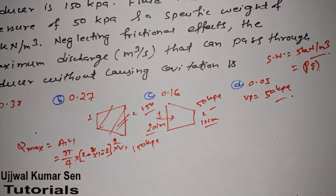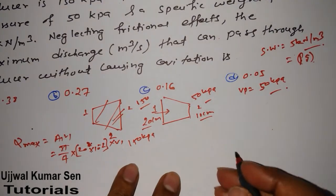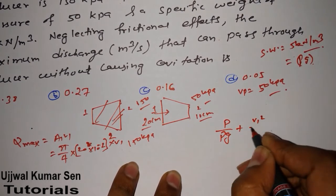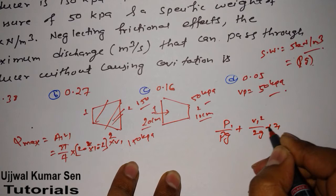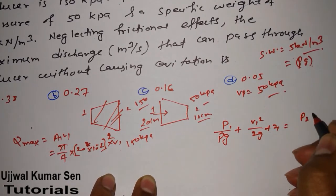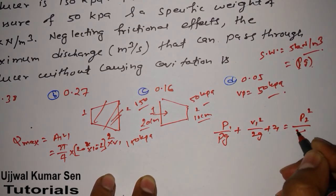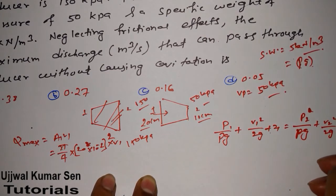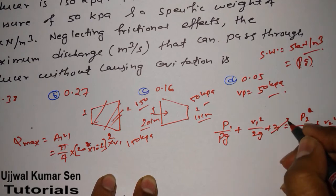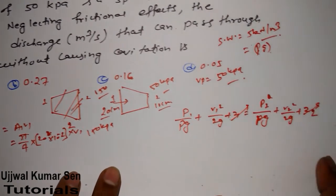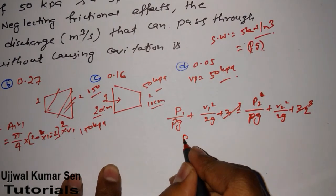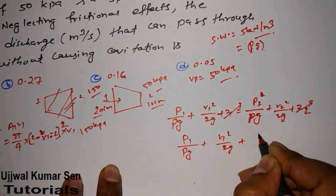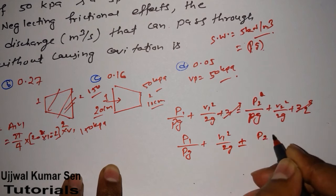We're getting 150 Pa here and 50 Pa here. Bernoulli's equation: P₁/(ρg) + V₁²/(2g) + z₁ = P₂/(ρg) + V₂²/(2g) + z₂. z₁ and z₂ get cancelled.